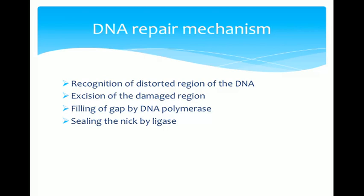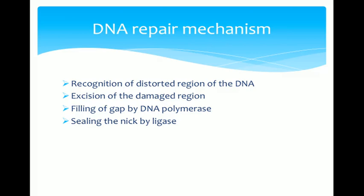Our main repair mechanisms first require recognition of a distorted region of DNA, then excision of the damaged region, filling the gap with DNA polymerase, and sealing the nick with ligase. These steps — recognize, cut, add, seal — happen in all the different DNA repair mechanisms, whichever it is.